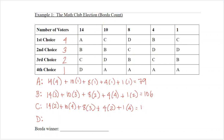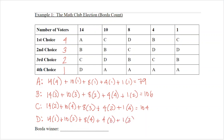For Dave: 14 people had him in fourth place, ten people in third place, eight people in first place, four people in second place, and one person in second place as well — totaling 81 points. The person with the most points is Boris, so Boris is the Borda candidate.